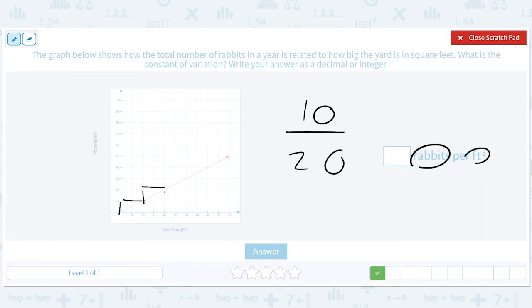So 10, 20, 10, 20. So that's going to be, again, one half. So it is 0.5.